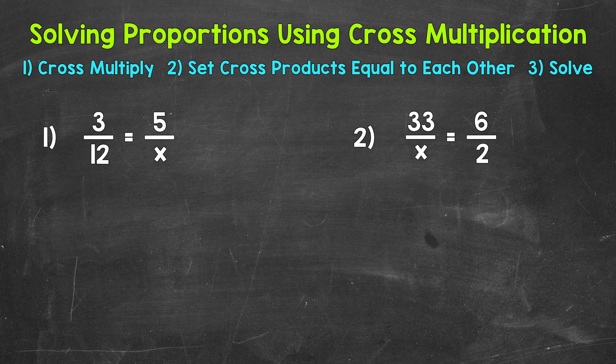When solving proportions using cross multiplication, we cross multiply, set the cross products equal to each other, and solve.